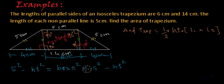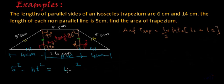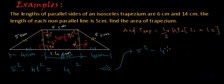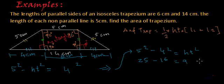Now putting base equal to 4 centimeters into the equation: 5² minus 4² = height². That gives us 25 minus 16 = 9, so height² = 9. Therefore, height = square root of 9, which is 3 centimeters. We have now found the height, and we already have the lengths of the parallel sides.